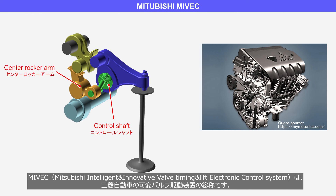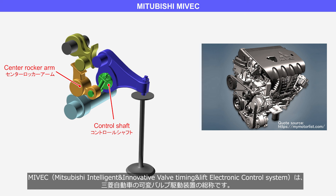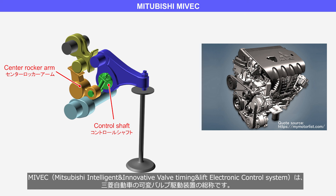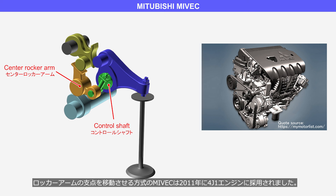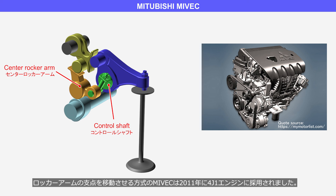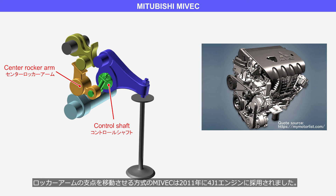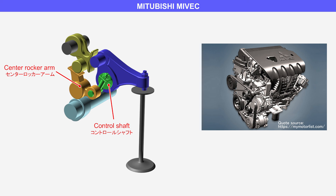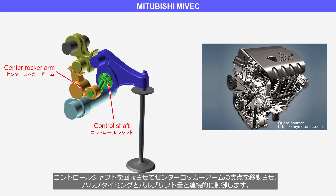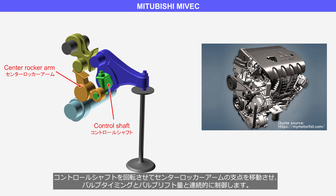MIVEC, Mitsubishi Intelligent and Innovative Valve Timing and Lift Electronic Control System, is the collective term for Mitsubishi Motors' Variable Valve Drive System. The moving pivot point type MIVEC was adopted for the 4J1 engine in 2011. This system continuously controls the valve timing and valve lift amount by rotating the control shaft to move the pivot point of the center rocker arm.